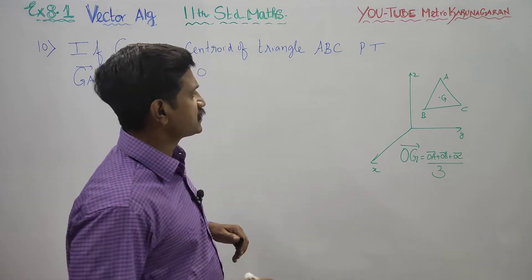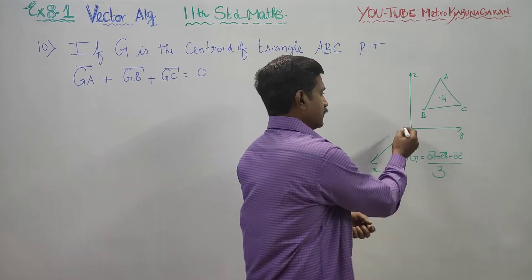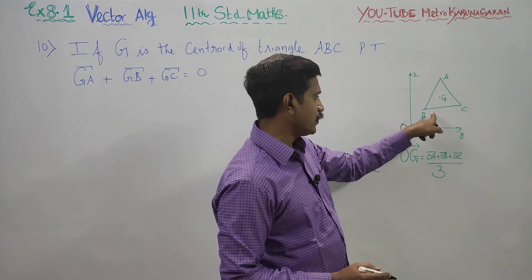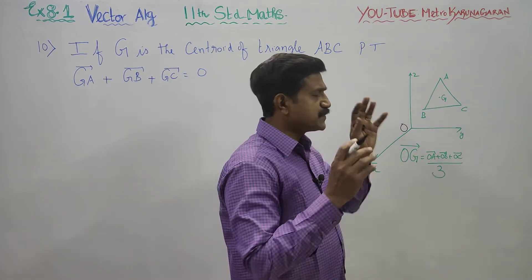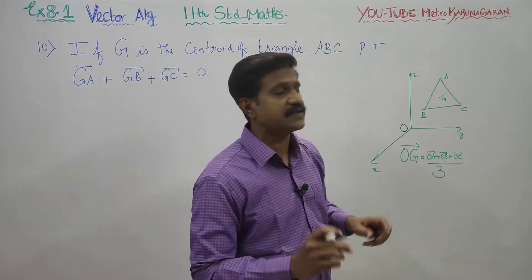Before entering into this proof, you must know that if ABC is a triangle with position vectors with reference to the origin, A has position vector OA, B has position vector OB, and C has position vector OC. What is the meaning of OA? It represents distance, direction, and reference.